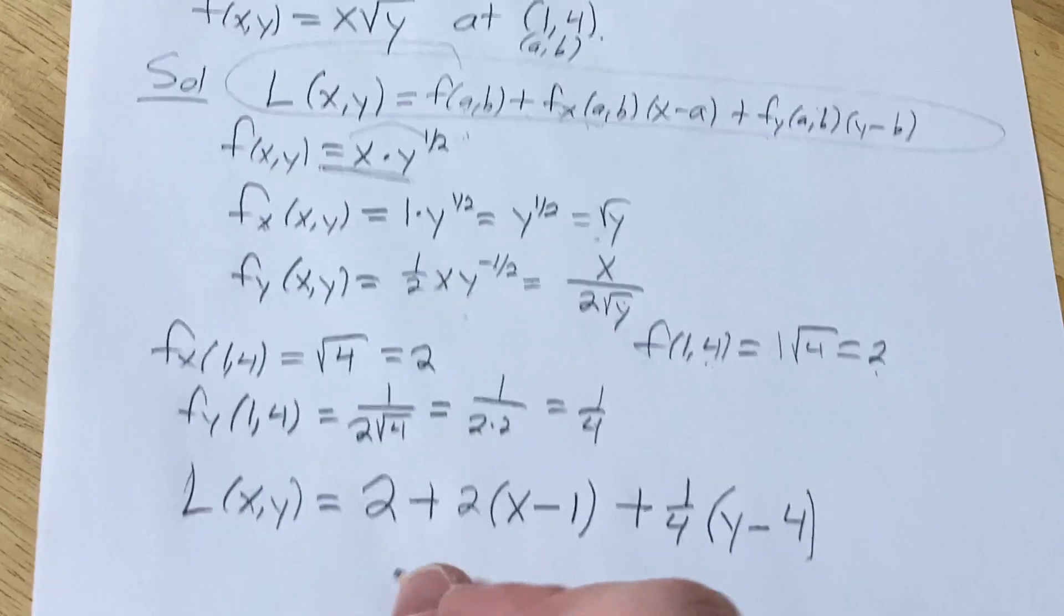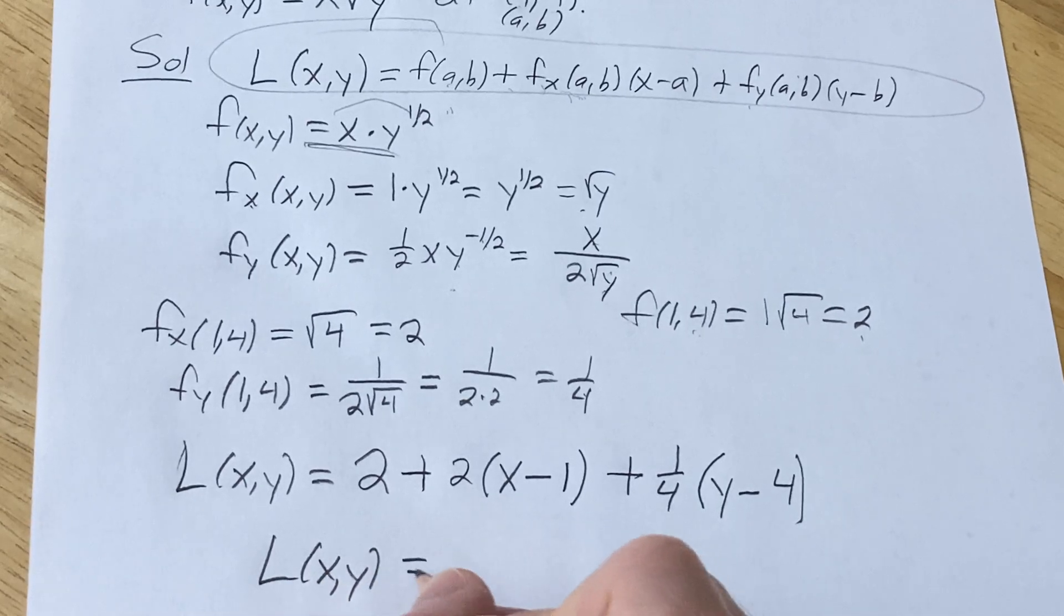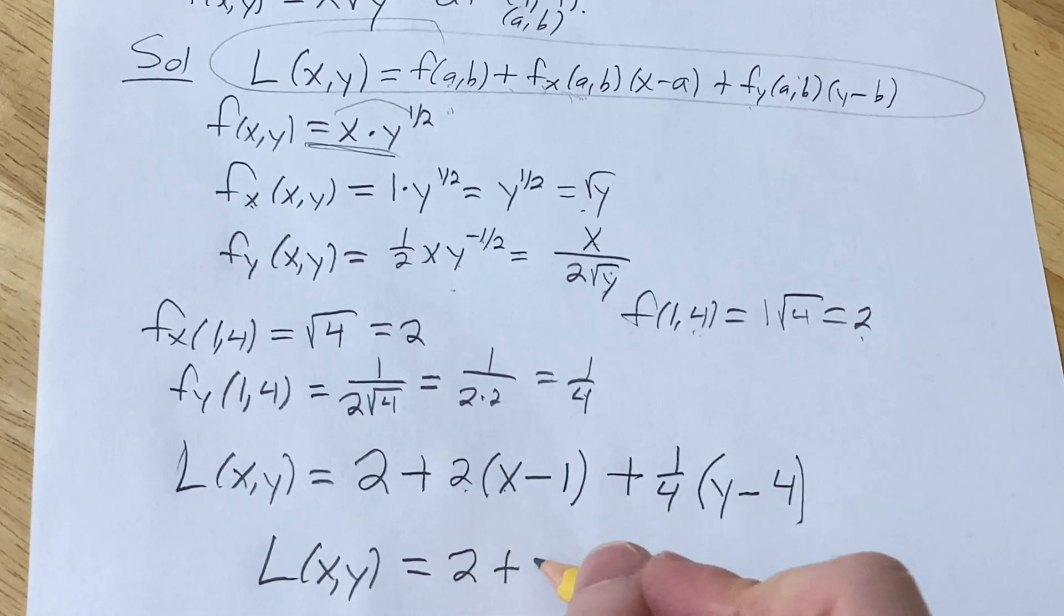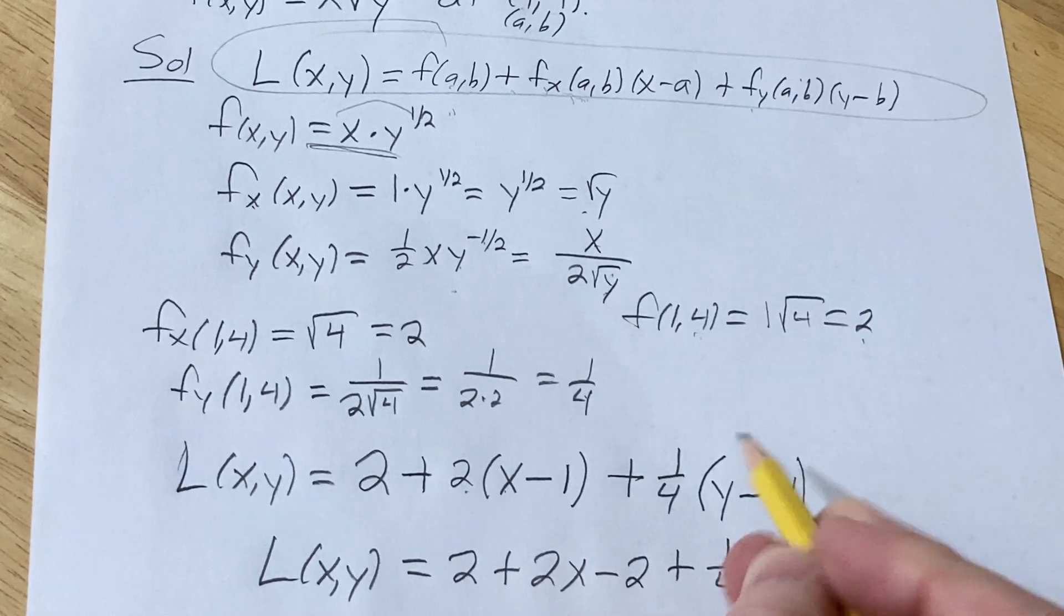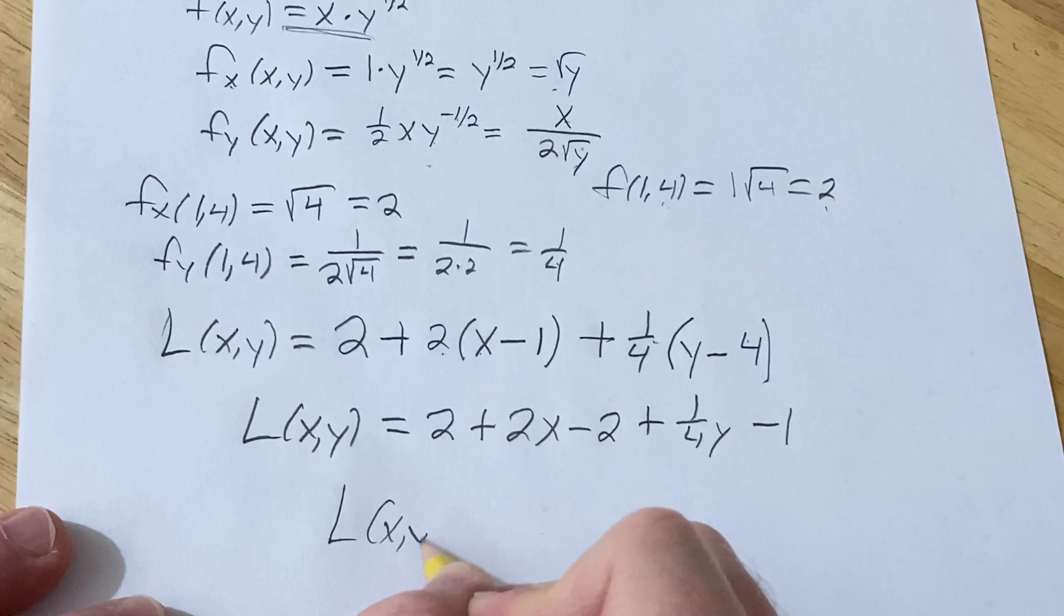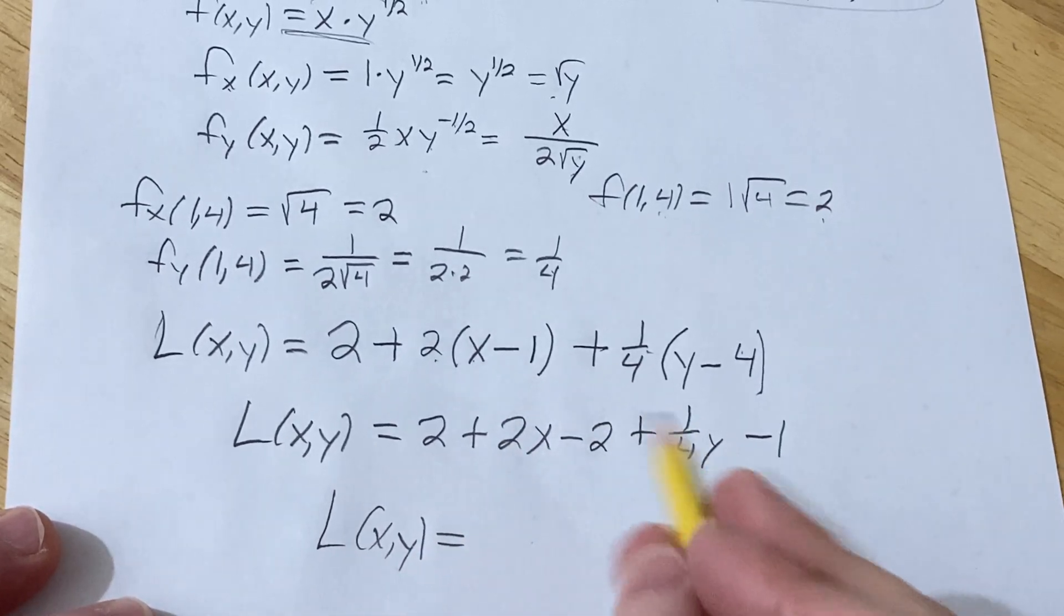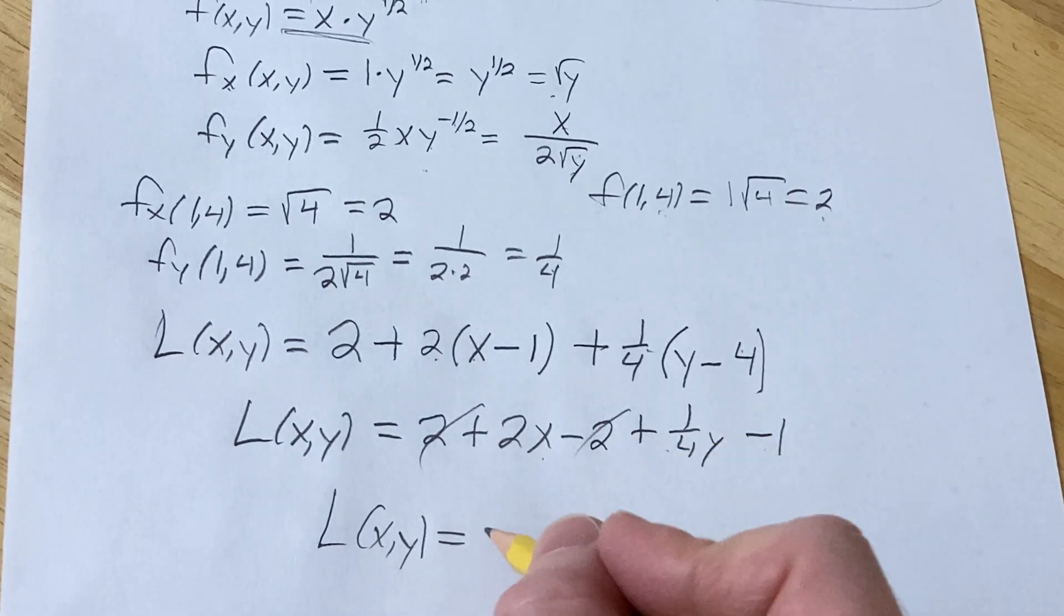Really nice. So we have L(x,y) equals 2 plus 2x minus 2 plus 1/4 y. And then here we just get a minus 1. Really beautiful. So L(x,y)... Oh, my pencils need sharpening. It's weird. Equals. Oh, look at that. It cancels. So we end up with 2x plus 1/4 y minus 1.